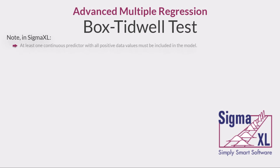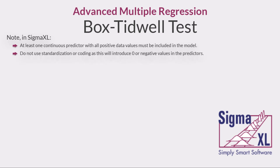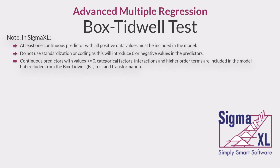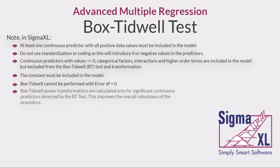Note that in SigmaXL, at least one continuous predictor with all positive data values must be included in the model. Do not use standardization or coding, as this will introduce zero or negative values in the predictors. Continuous predictors with values less than or equal to zero, categorical factors, interactions, and higher order terms are included in the model but excluded from the Box-Tidwell test and transformation. The constant must be included in the model. Box-Tidwell cannot be performed with error degrees of freedom equals zero. Box-Tidwell power transformations are calculated only for significant continuous predictors detected by the BT test. This improves the overall robustness of the procedure.